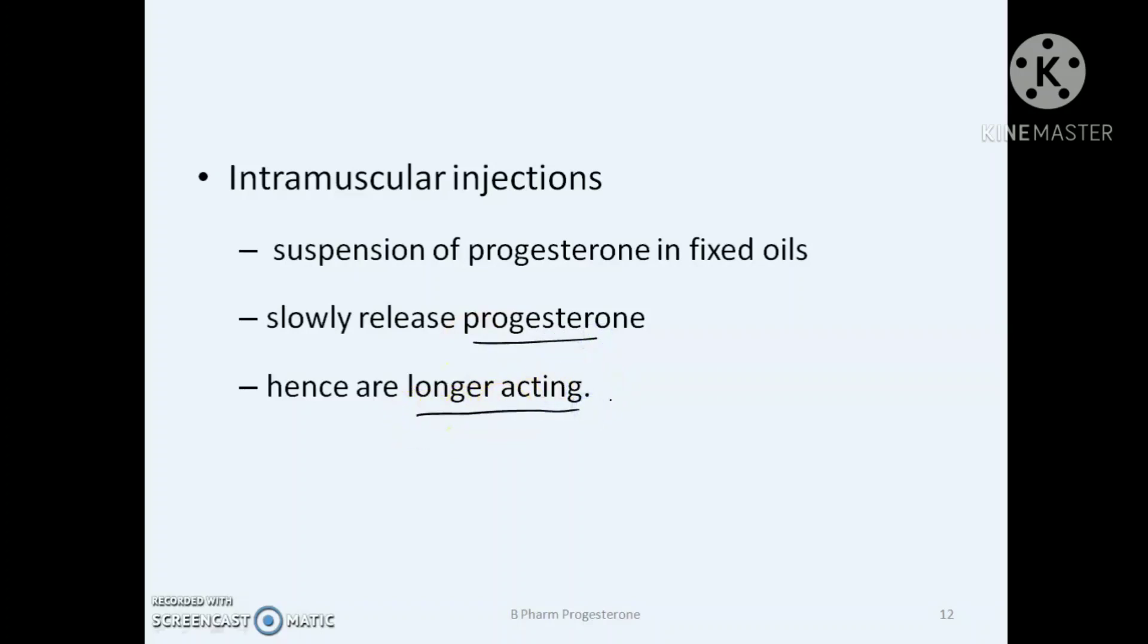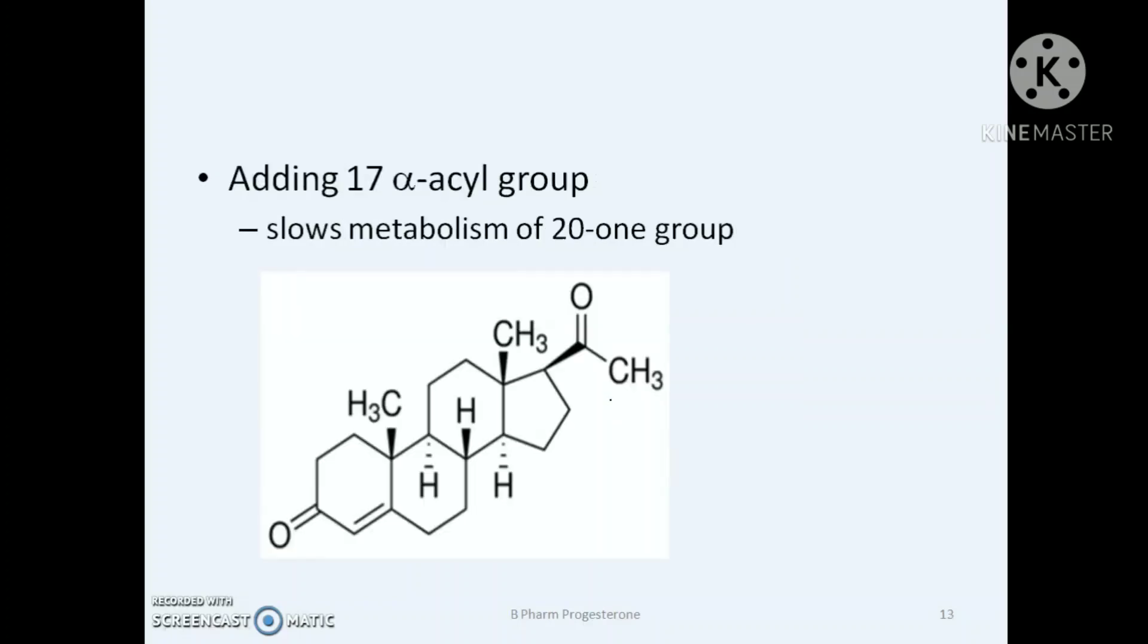In order to overcome the low oral bioavailability of progesterone, introduction of a 17-alpha acyl group slows metabolism of the 20-keto group. Example is hydroxyprogesterone. A 17-alpha hydroxy group is introduced at the 17th position and that is acylated with fatty acids. Examples are hydroxyprogesterone acetate, hydroxyprogesterone caproate, etc.